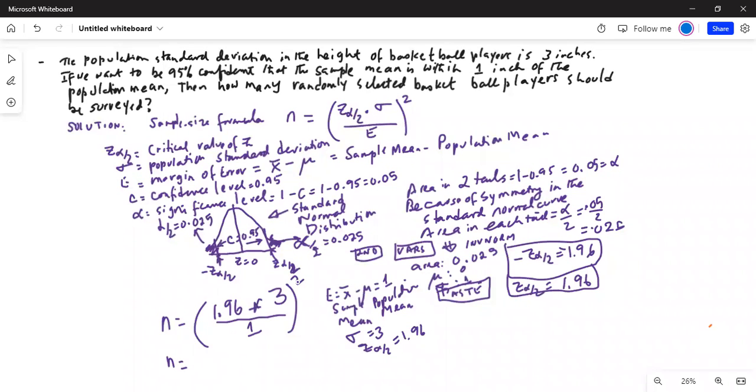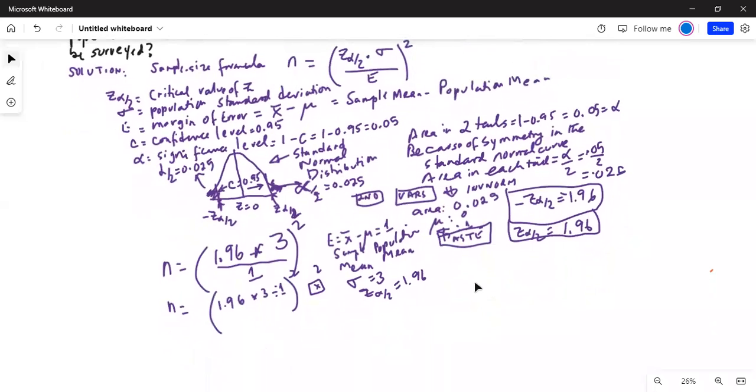Left parenthesis 1.96 multiplied by 3, then divide by 1, then put the right parenthesis back. Press the x square key to get the exponent, and you are going to round it up to the next nearest whole number.